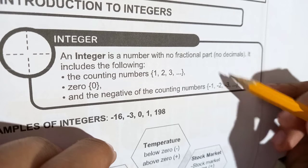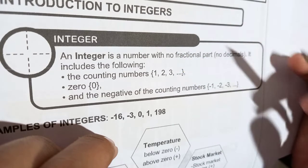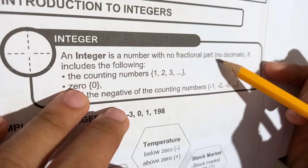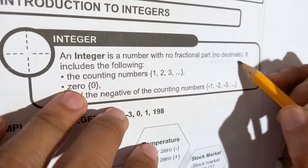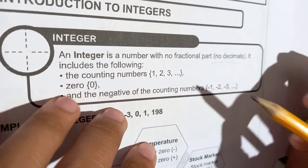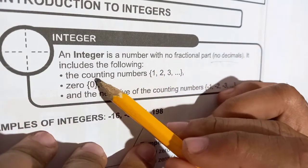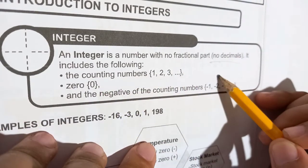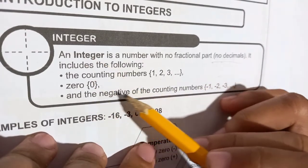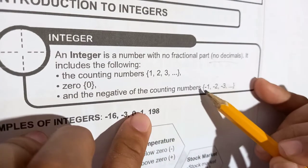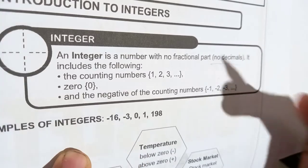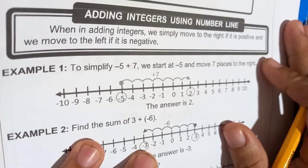Since we are already talking about integers, what is an integer? An integer is a number with no fractional part and no decimal. It includes the counting numbers — one, two, three, and so on — as well as zero, and the negatives of the counting numbers: negative one, negative two, negative three, negative four, negative five, and so forth.